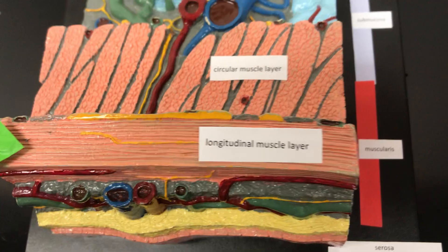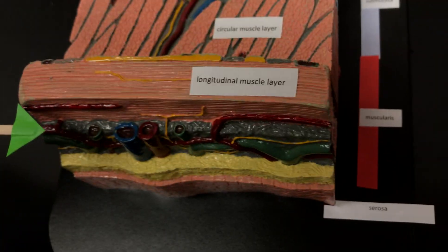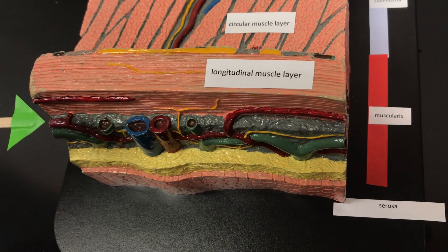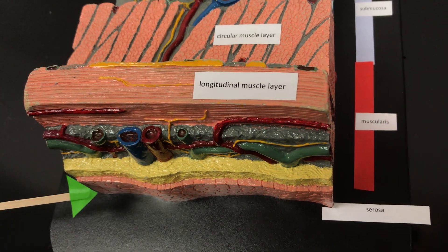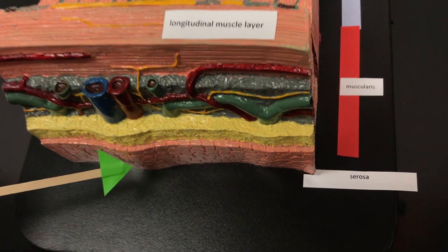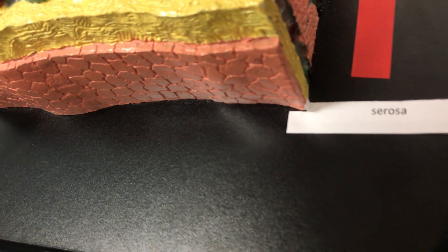In the stomach there will be three layers, so there'll be an outer oblique layer. The serosa arises from the peritoneum and it's like the skin of the small intestines.